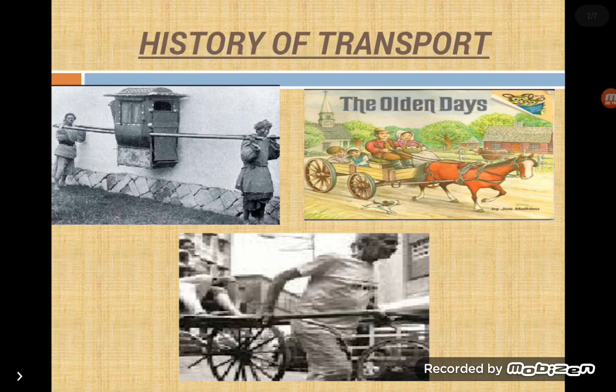Early humans traveled by foot and carried their goods themselves. After a while, they started using animals to carry them and their goods from one place to another. Later, the invention of the wheel changed the way people traveled.